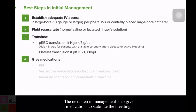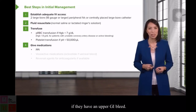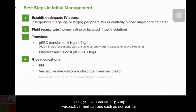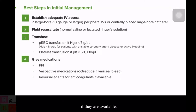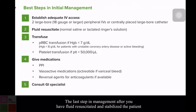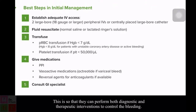The next step is to give medications to stabilize the bleeding. All patients should receive a proton pump inhibitor to reduce acid secretion in the stomach and hopefully slow the rate of bleeding if they have an upper GI bleed. Consider giving vasoactive medications such as octreotide, but only if you suspect a variceal bleed. Also consider any reversal agents for anticoagulants your patient takes, if available. After fluid resuscitation and stabilization, consult GI specialists so they can perform both diagnostic and therapeutic interventions to control the bleeding.